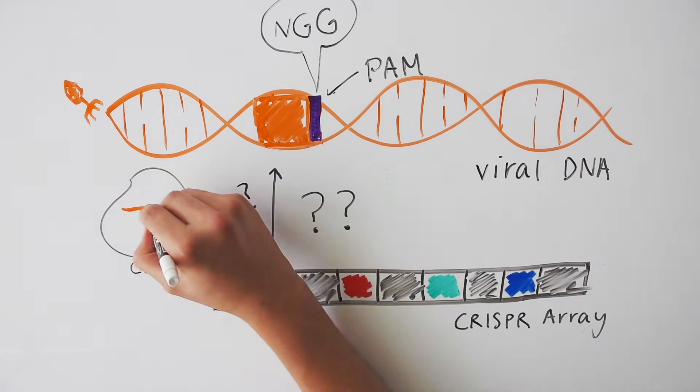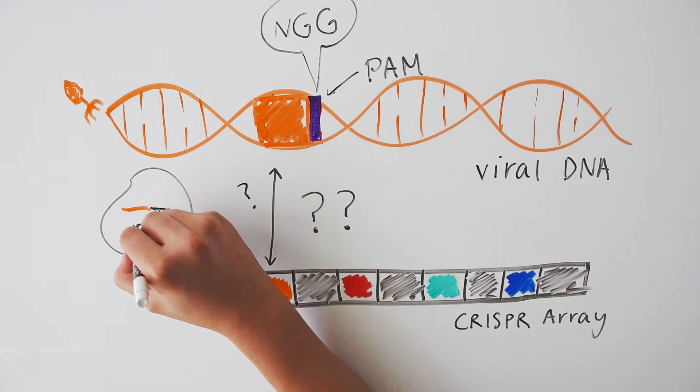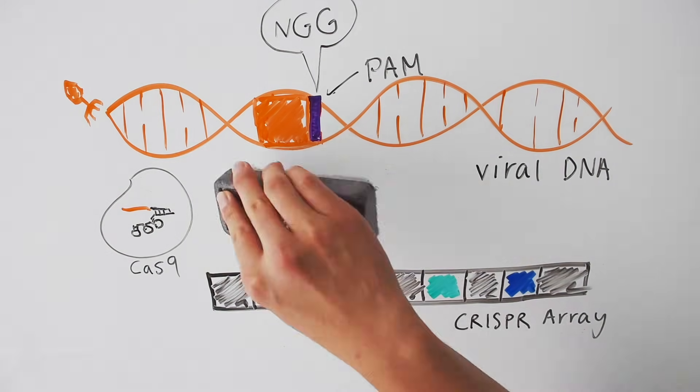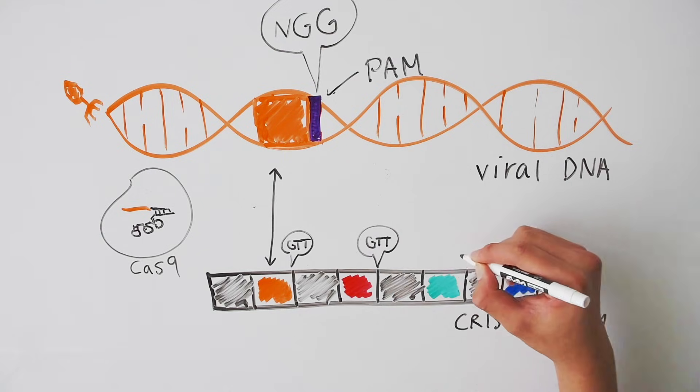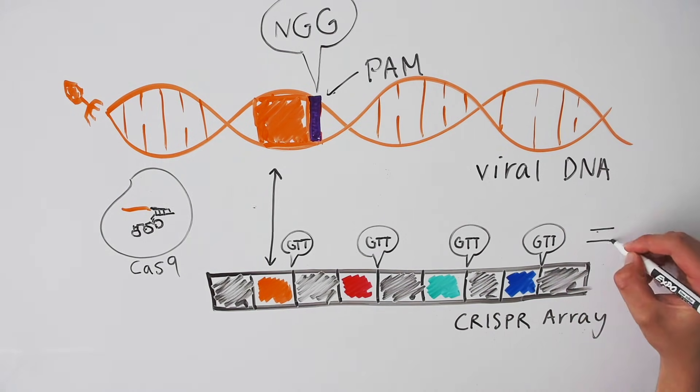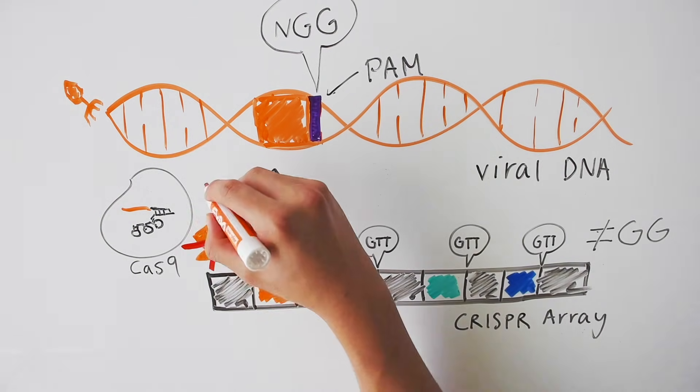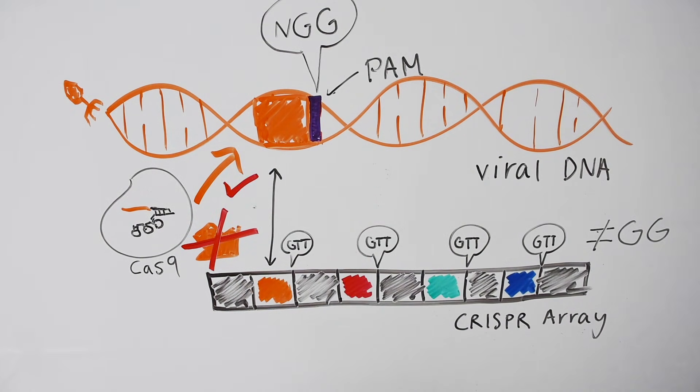How does this keep the bacterium from hurting itself? The key is that the spacer sequences within the CRISPR array are not followed by a GG. The sequence of the repeat is always the same, GTT. This means that the Cas9 is unable to bind to the CRISPR array and thereby avoids cutting the bacterium's own genome.